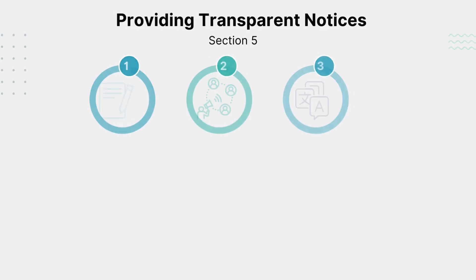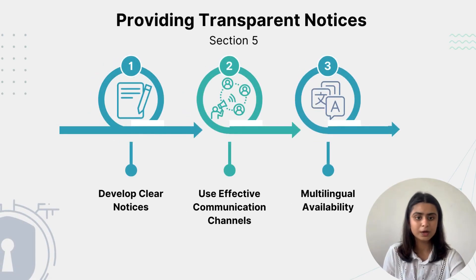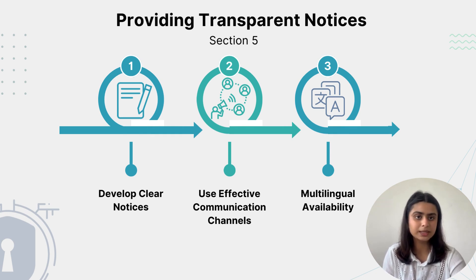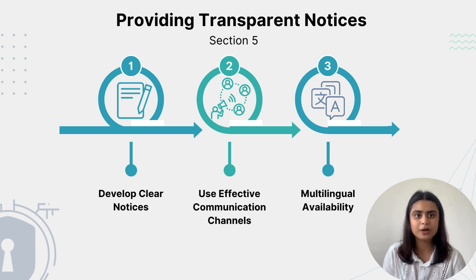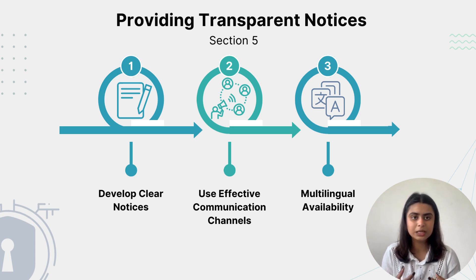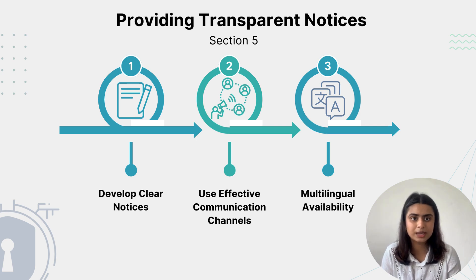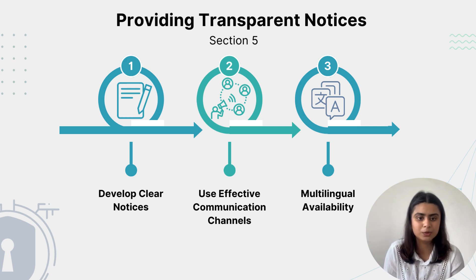Let's talk about Section 5. Here we need to inform individuals about the data being collected, its purpose, and their rights. The action steps would be: first, to have clear notices — we create clear notices explaining what data is collected and how it will be used.